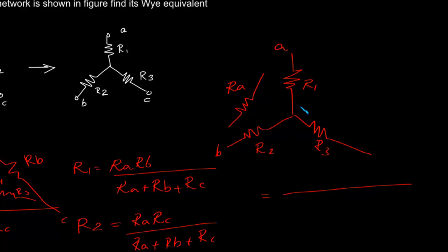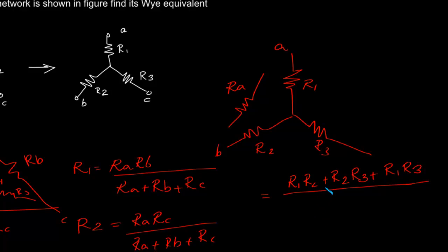The numerator will always be R1·R2 plus R2·R3 plus R1·R3. The numerator will be the same for all three resistances we have to find out — it will be the same for Rb also, and similarly for Rc also.